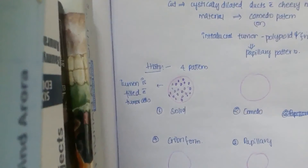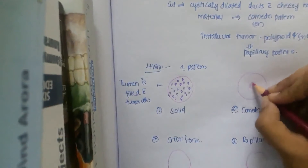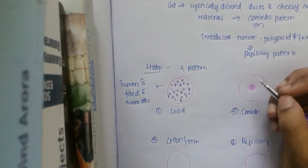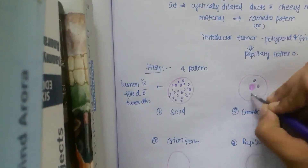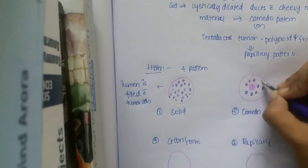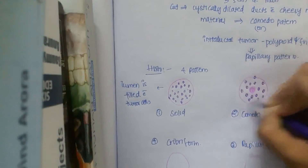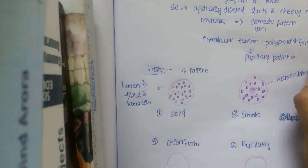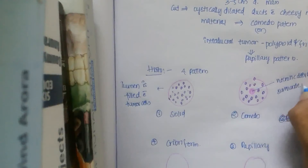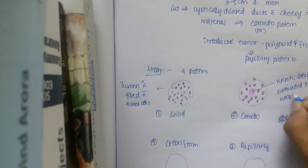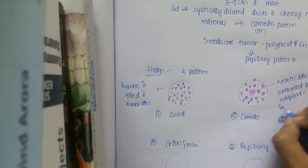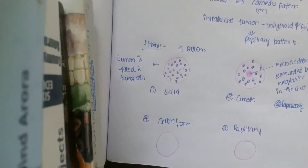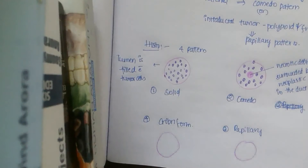In the comedo pattern, there is central necrosis surrounded by neoplastic cells within the duct. So centrally there is necrotic debris, which is surrounded by neoplastic cells in the duct.